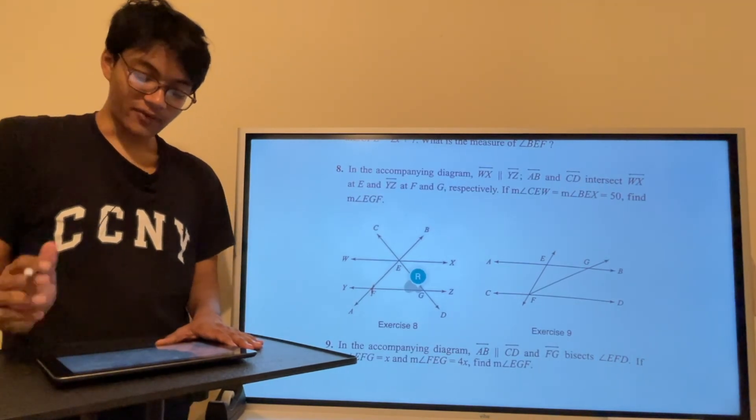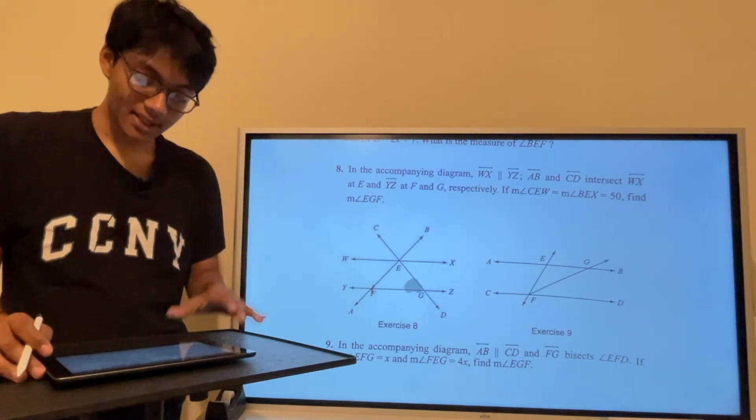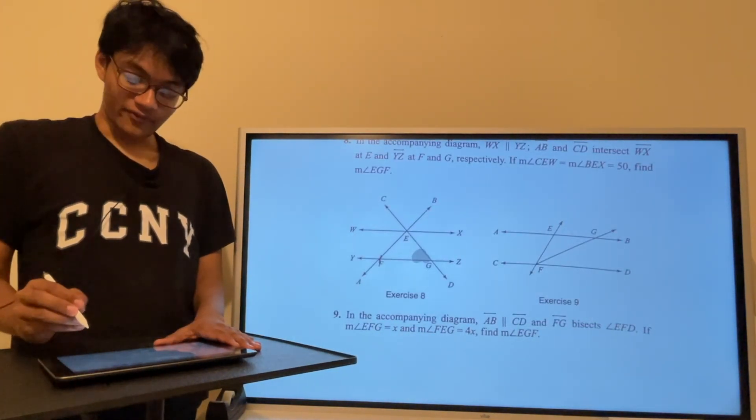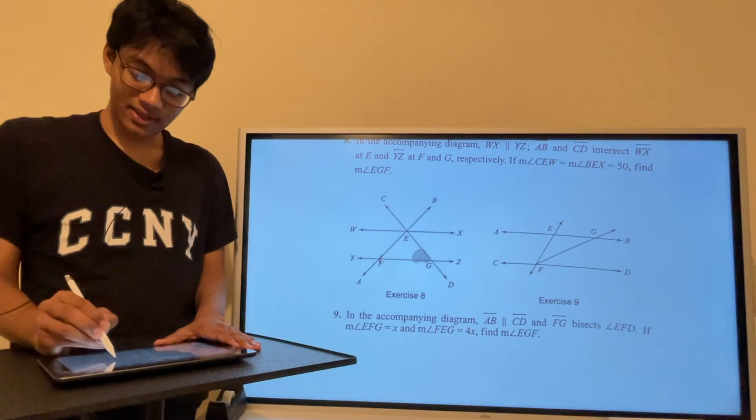Our final question for the exit slip says we have to find the measure of angle EGF again. So EGF is now this angle.